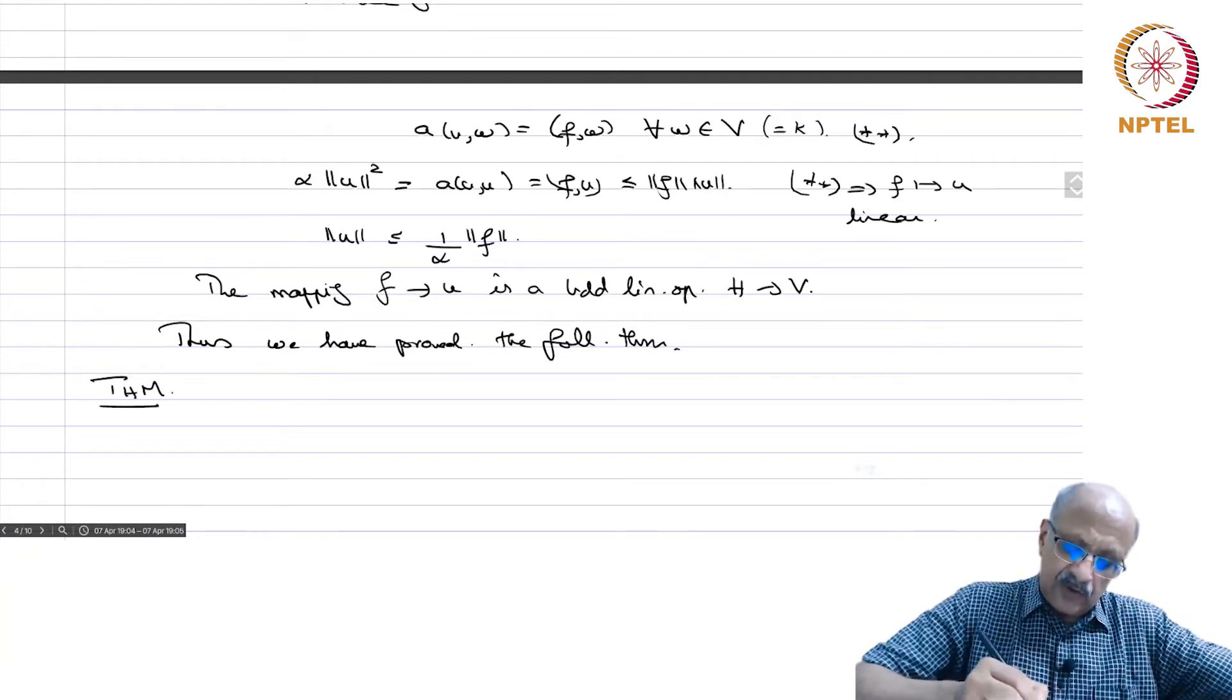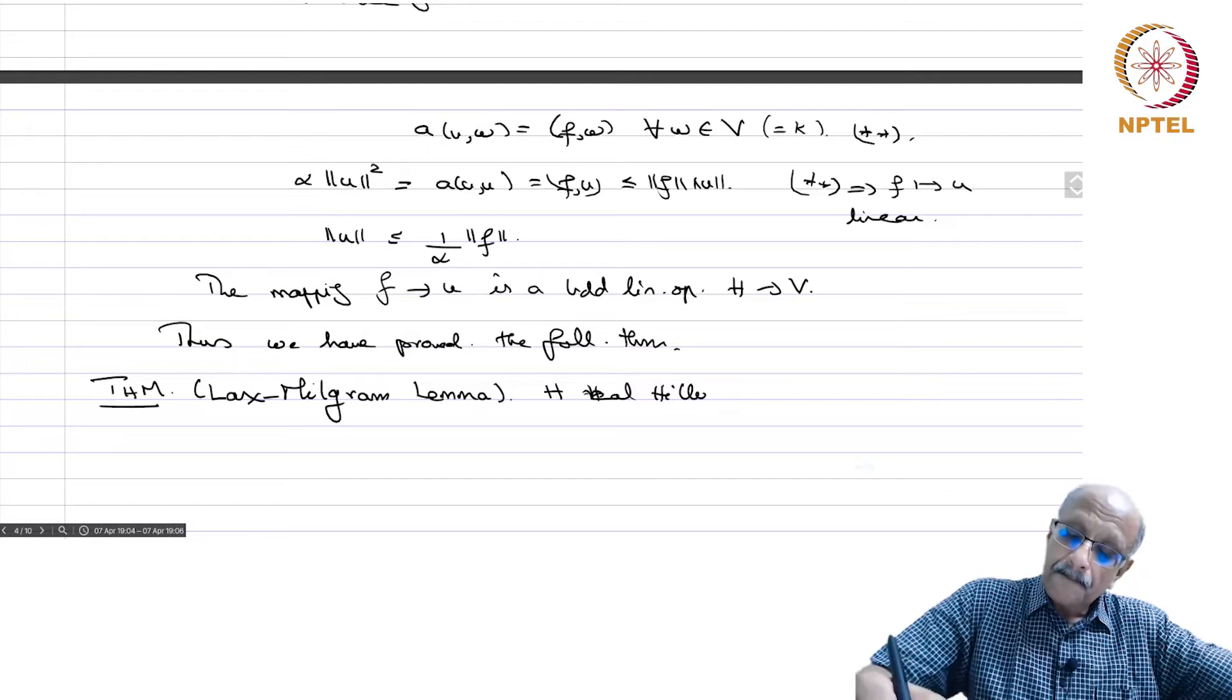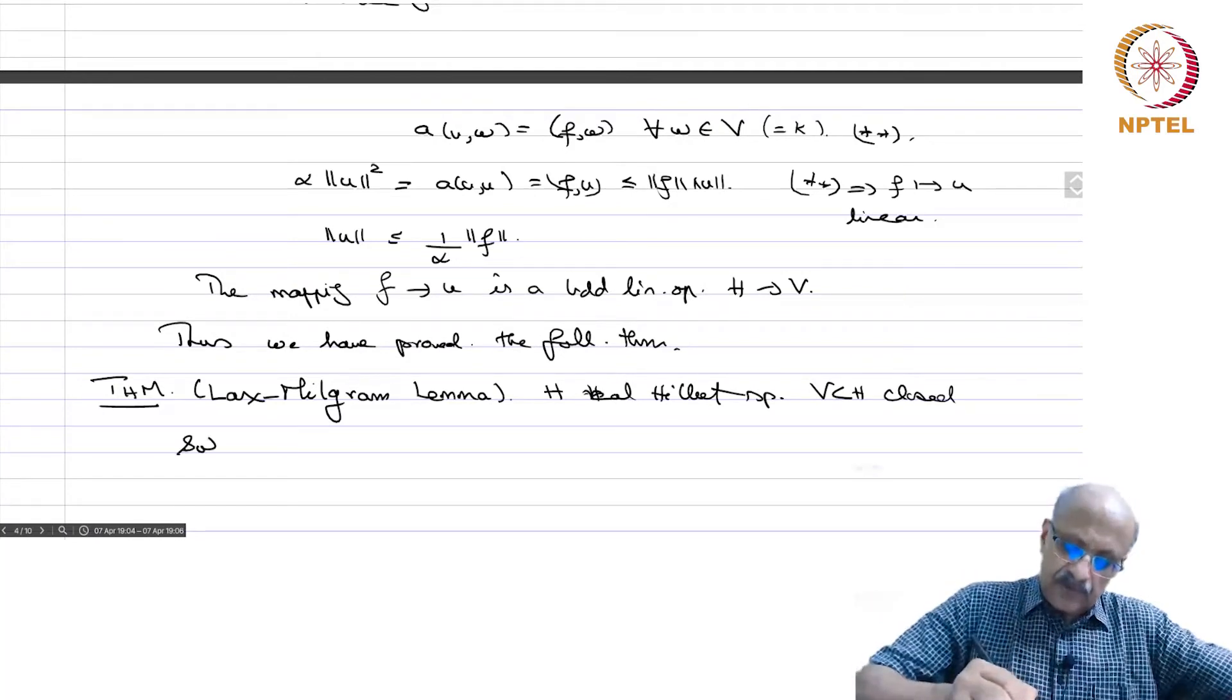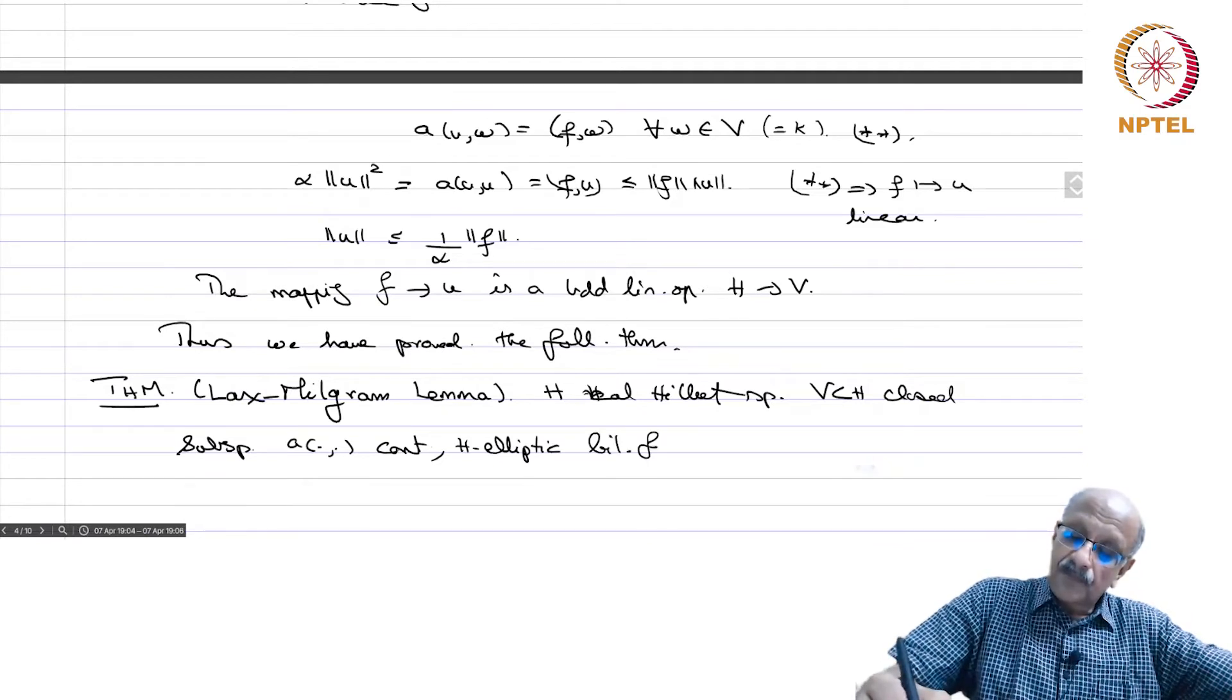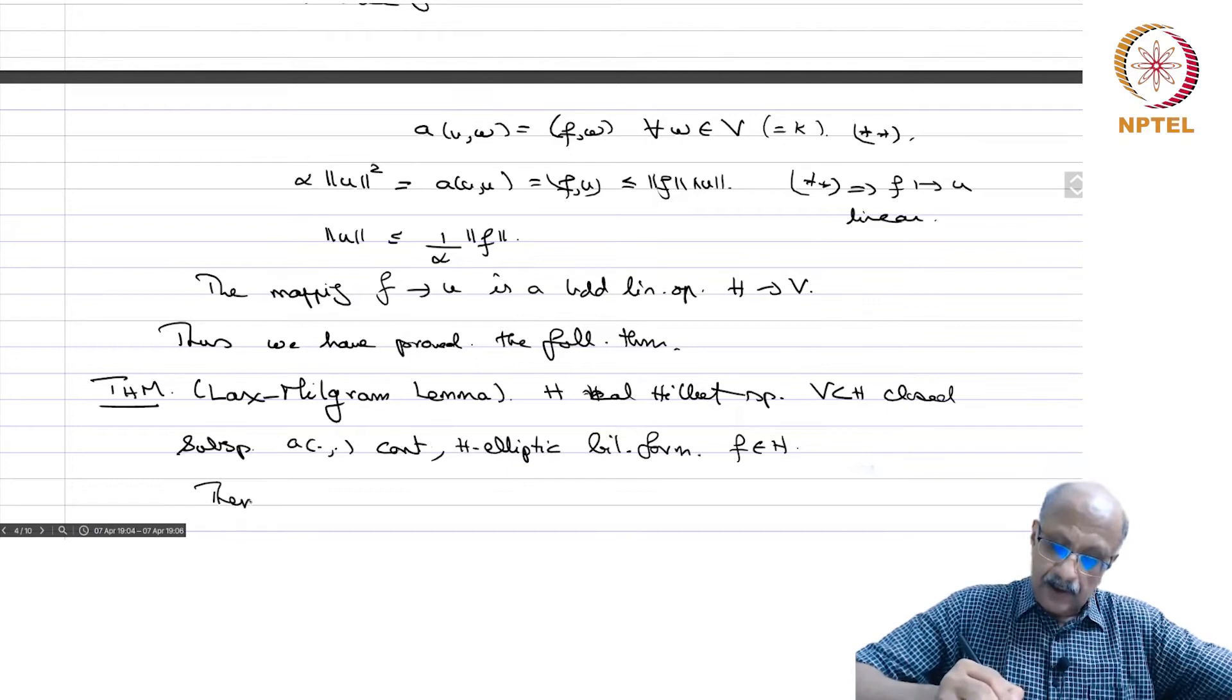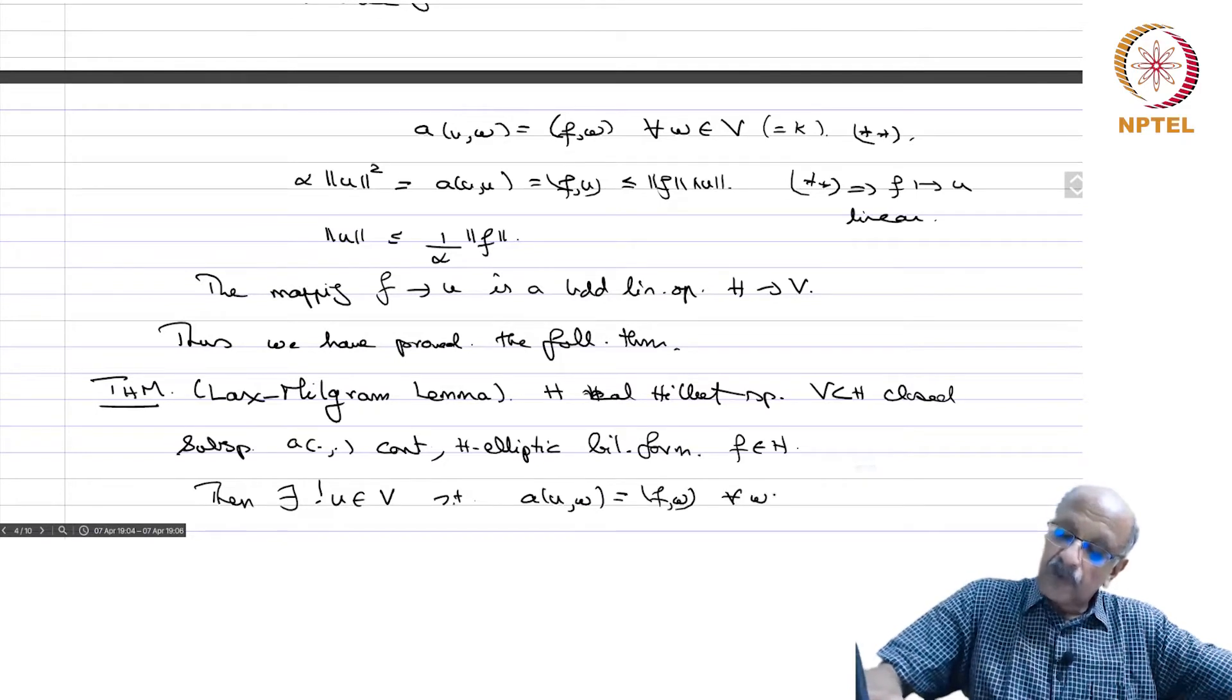This is a very important theorem which we will use again and again. H is a real Hilbert space, V contained in H is a closed subspace, A is continuous and H-elliptic bilinear form, F in H. Then there exists unique U in V such that A(u,w) equals F(w) for every w in V.